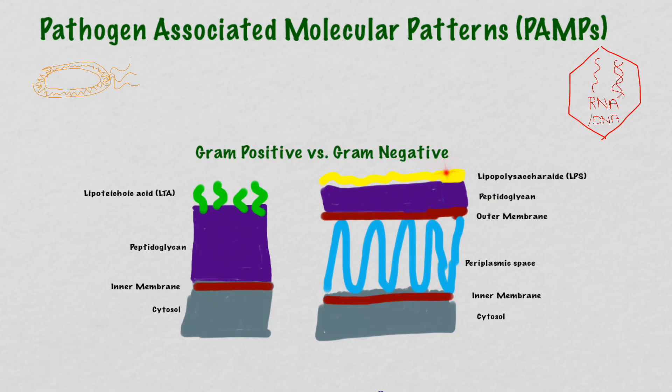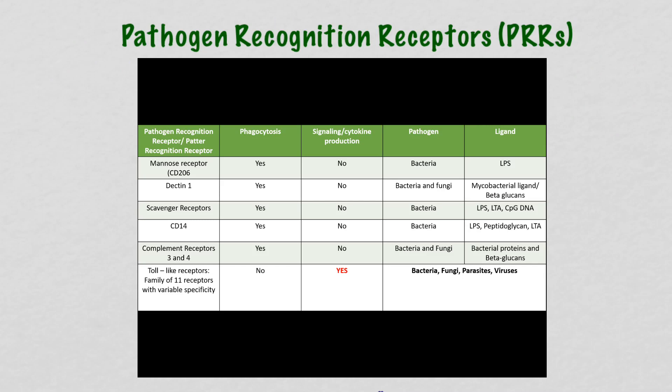LPS is extremely good at causing a strong innate immune response — we call it immunogenic, because it elicits a great response. It is detected by many pattern recognition receptors, notably CD14, which is a marker on monocytes that is also important in recognizing bacterial infections. Here is a table of pattern recognition receptors and their respective ligands, the PAMPs.